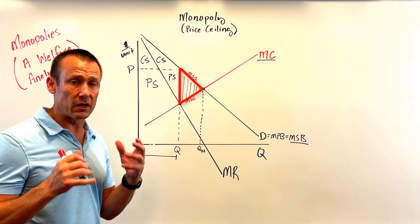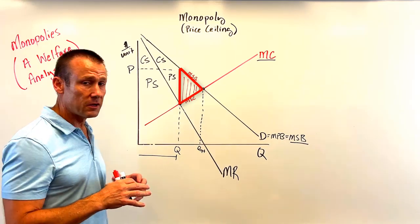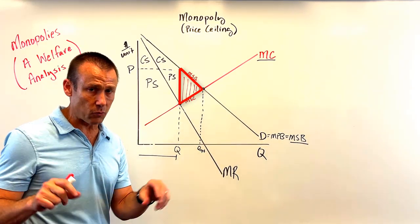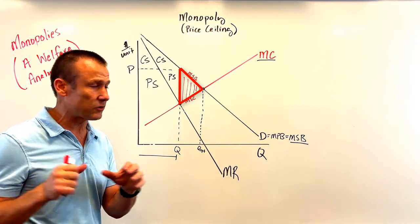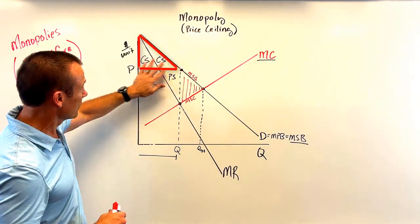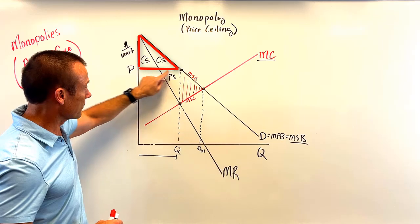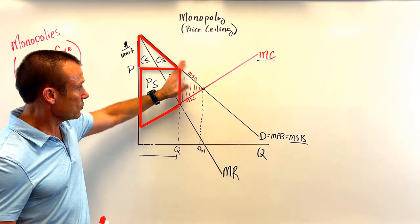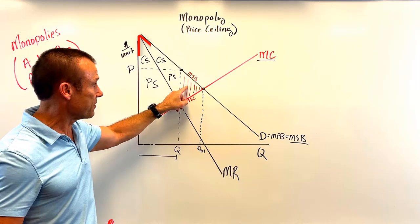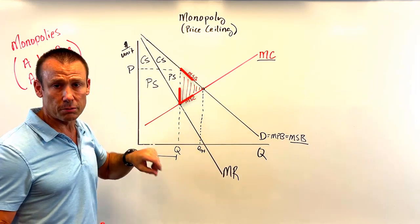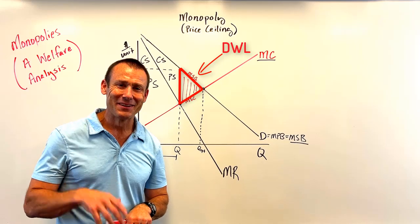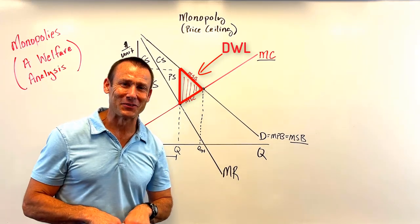So that's your welfare analysis with no intervention and no price discrimination. You get consumer surplus here, producer surplus here, no surplus to the right of Q, and we're missing out on this potential surplus — that's the deadweight loss. Hope that makes sense, and we'll see you in the next video.